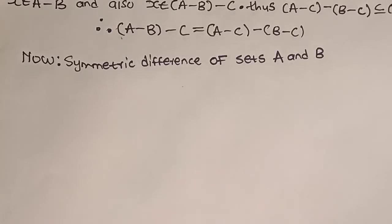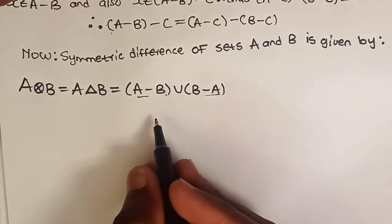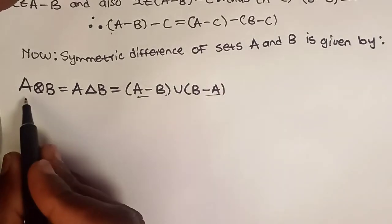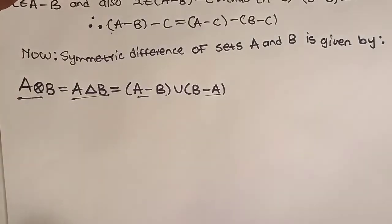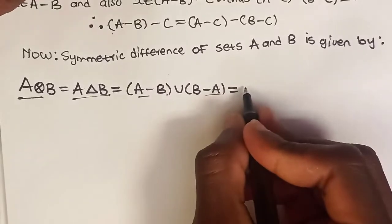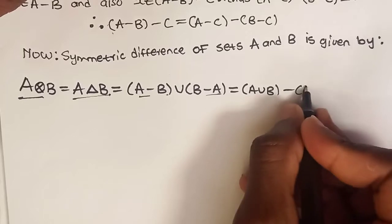The symmetric difference exists between two sets — we can have sets A and B. It is given by the union of their differences, which are disjoint sets. It depends on which notation you are used to for the symmetric difference, so use the one you are used to. This is the same as (A∪B)-(A∩B).